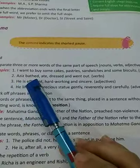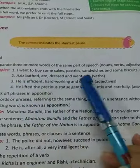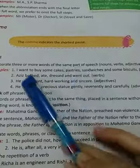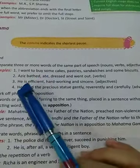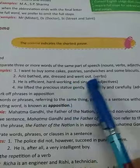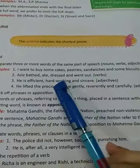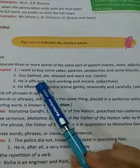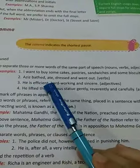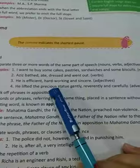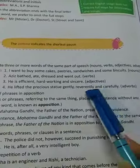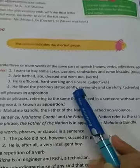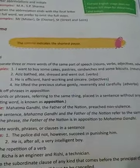Second example: 'Aziz bathed, ate, dressed and went out.' These are verbs, and in order to separate them we used a comma. 'He is efficient, hardworking and sincere.' These are adjectives describing the quality of a person, so again we used a comma. 'He lifted the precious statue gently, reverently and carefully.' These are adverbs, and in order to separate them, again, we used a comma.